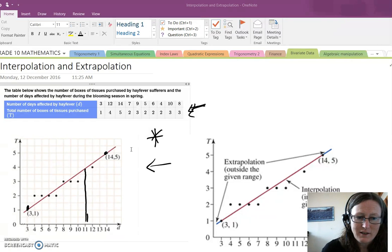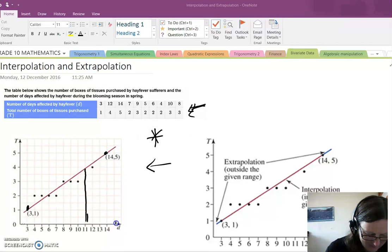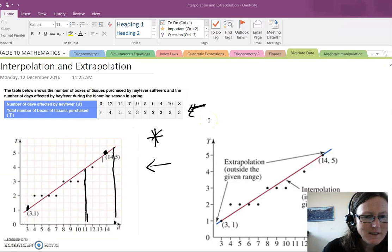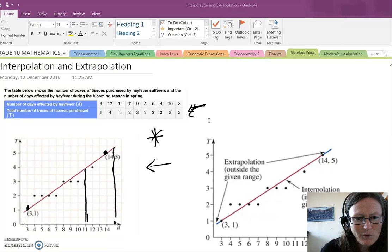If, however, they said for 15 days, how many boxes of tissues would be purchased, well, 15 is here. If we go up, 15 falls above the highest value. This is an example of extrapolation, where it falls above the highest or the lowest point.